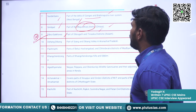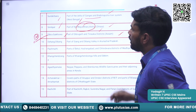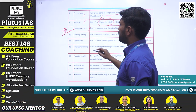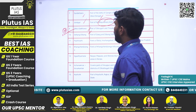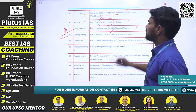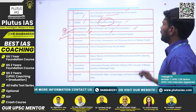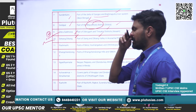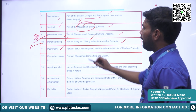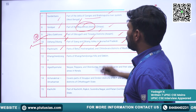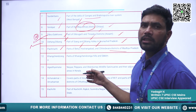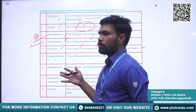Parts of Dibrugarh and Tinsukia districts of Assam are designated as Deobari-Saikhoa Biosphere Reserve. Next is Dehang-Dibang, also not under UNESCO protection — parts of Siang and Dibang Valley in Arunachal Pradesh. Next is Pachmari — parts of Betul, Hoshangabad, and Chhindwara districts of Madhya Pradesh.